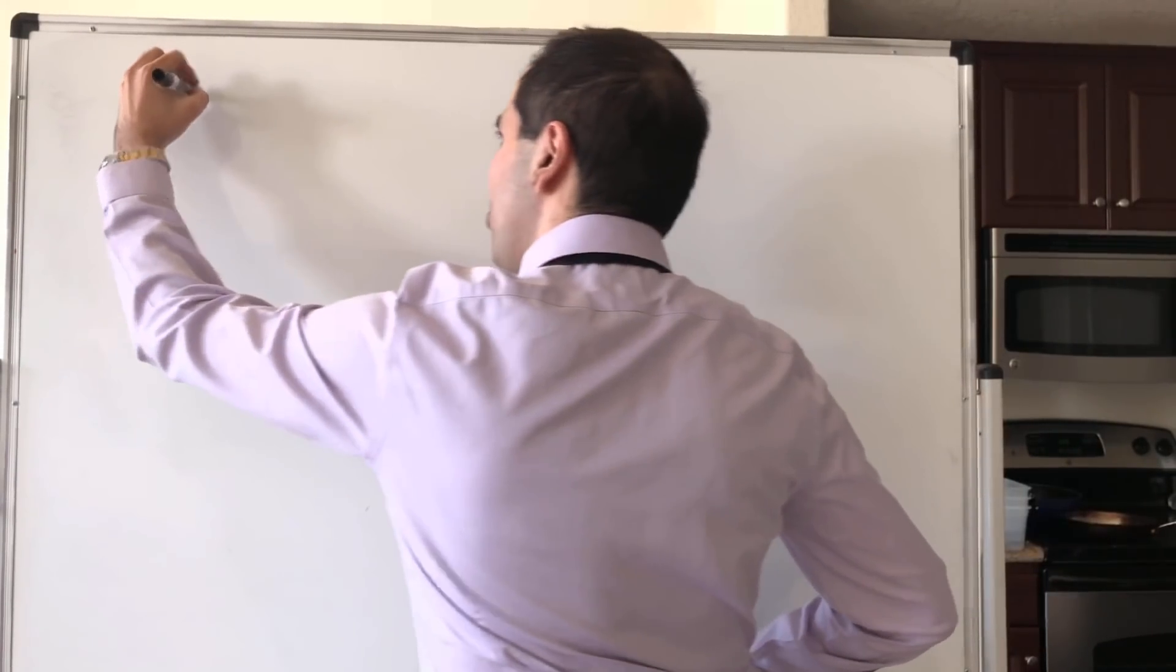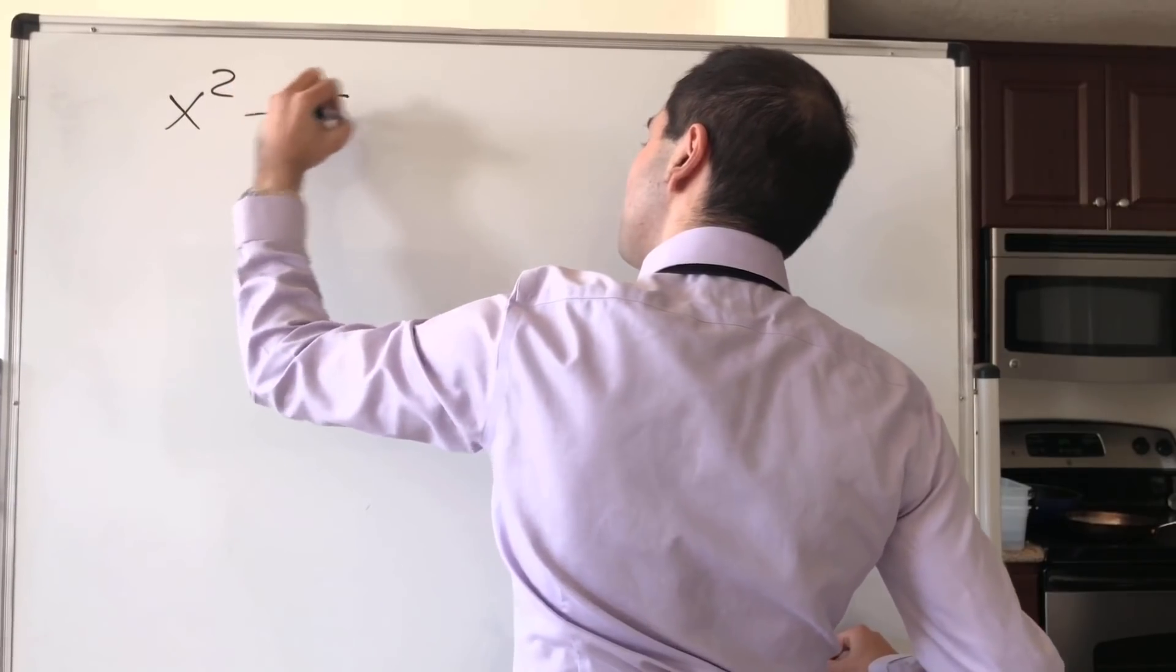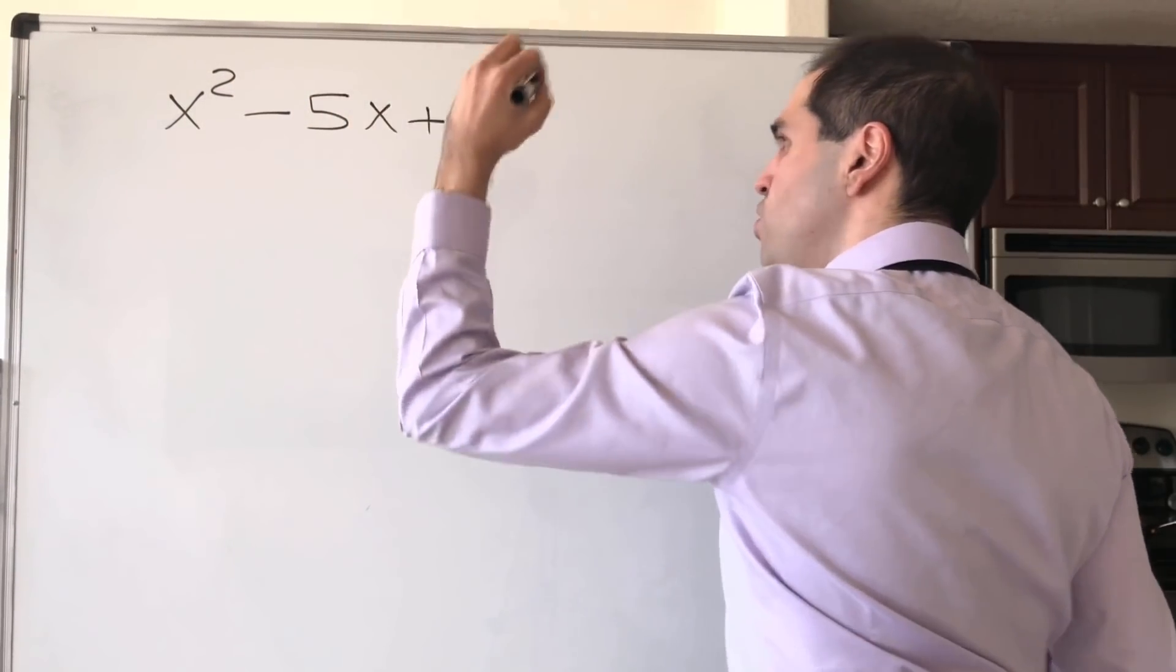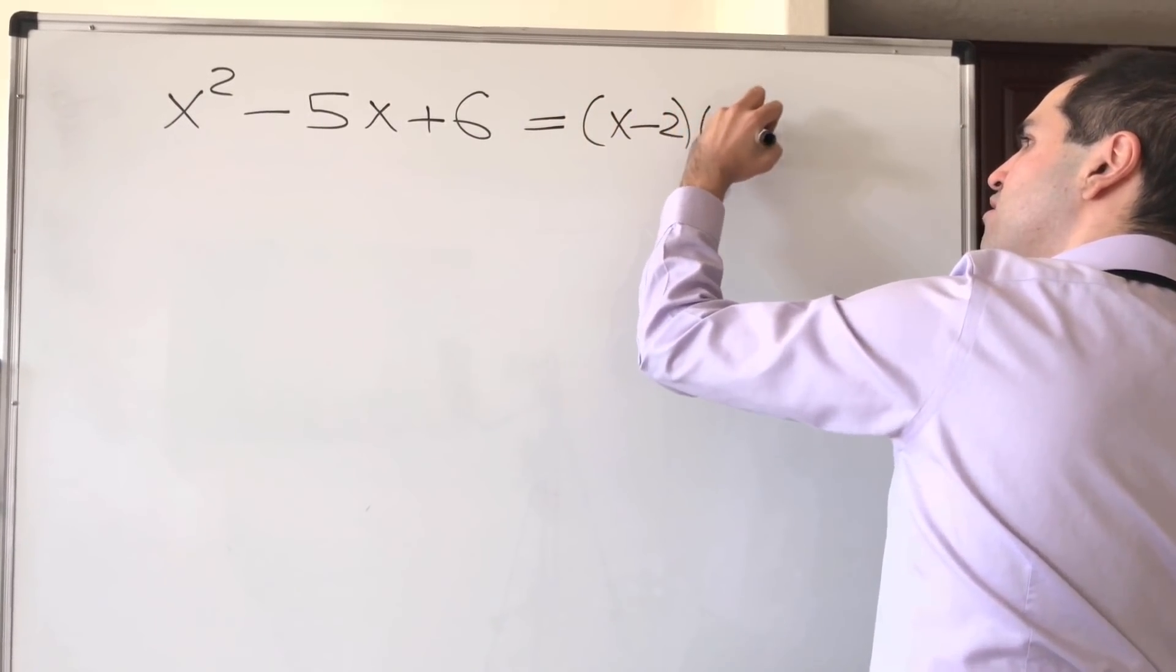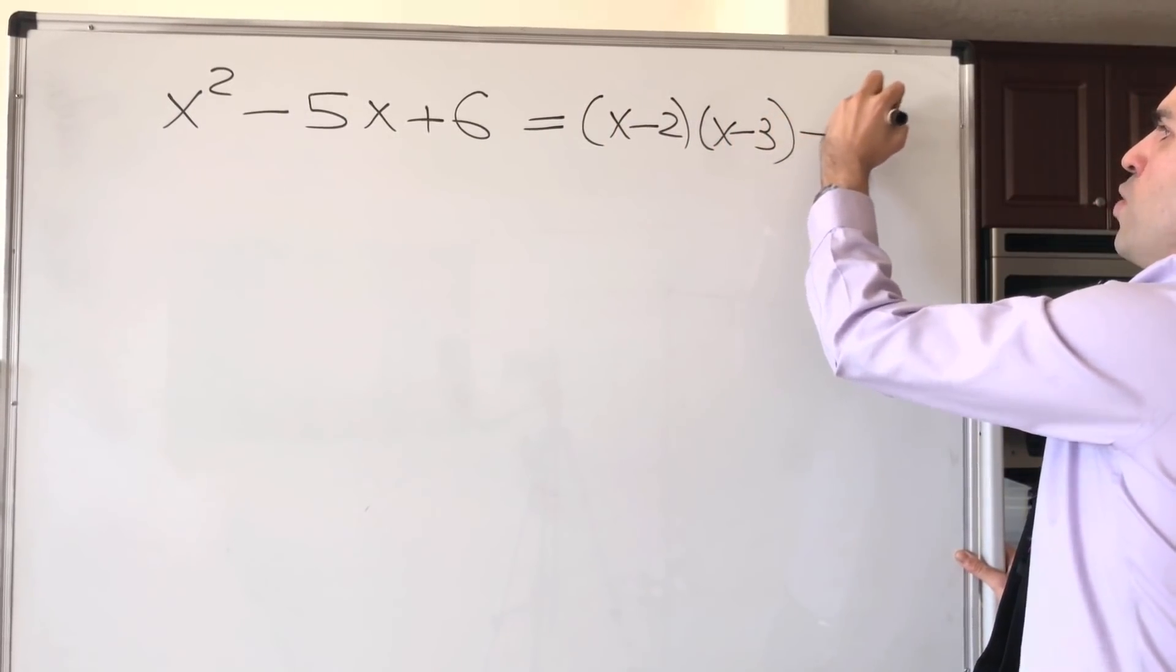For example, consider x squared minus 5x plus 6. This you can factor out as x minus 2 times x minus 3, and therefore has roots 2 and 3.